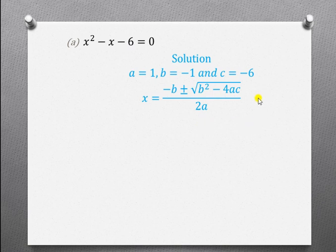And then do the necessary substitutions. It means wherever you see A, we shall put 1. And wherever you see B, we shall put negative 1. And where you see C, we are putting negative 6. So, that is what we are going to basically do in this step.